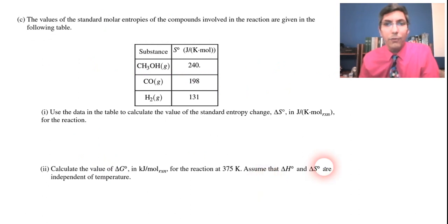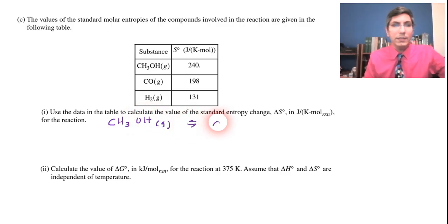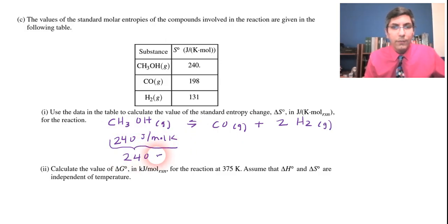Now for part C, we have a thermodynamics question. This time we are given standard molar entropies for each of these compounds. And we're being asked to calculate the delta S for this reaction. The reaction is CH3OH gas yields CO gas plus two hydrogen molecules gas. And basically what you want to do is sum up all the products, sum up all the reactants, and then take products minus reactants. And so the CH3OH is about 240 joules per mole Kelvin. And that's the only reactant that we have.